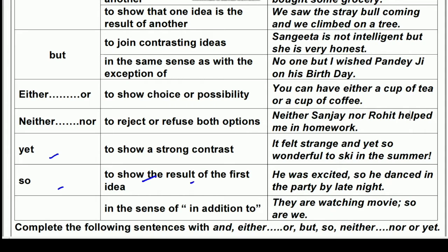'So' is used to show the result of the first idea. For example, 'he was excited, so he danced at the party till late night' — he was very excited, so he kept dancing at the party till late. 'So' is also used in the sense of 'in addition to.' For example, 'they are watching a movie, so are we' — they are watching a movie and so are we.